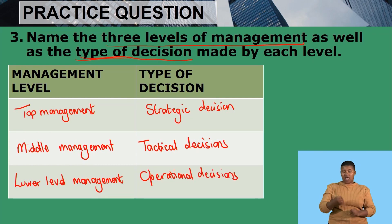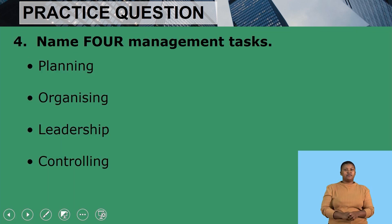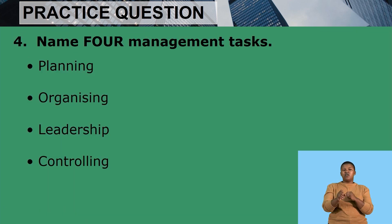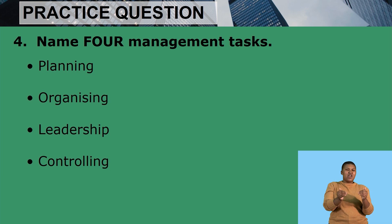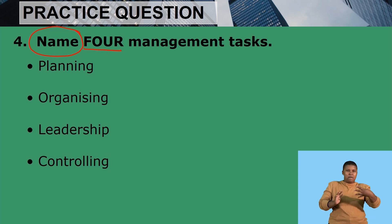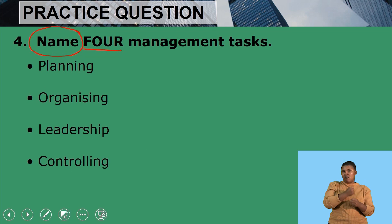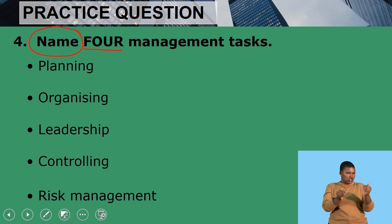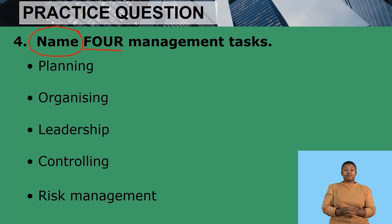There we have our three levels of management as well as the types of decisions they make. The next question asks: name four management tasks. When they say 'name,' you only have to shortly answer the question, and when they ask for four, you don't give more than four. So the four tasks are: planning, organizing, leadership, and control. If you couldn't remember one, you could substitute something like risk management, but only answer the number given.